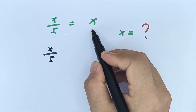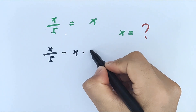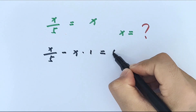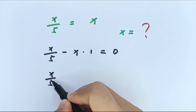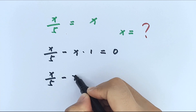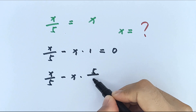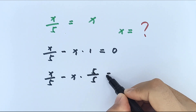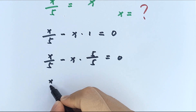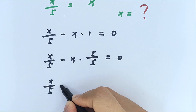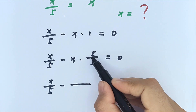We take this to the left side, so it's minus x times 1 equals 0. Then x over 5 minus x — 1 is the same as 5 over 5 — equals 0.